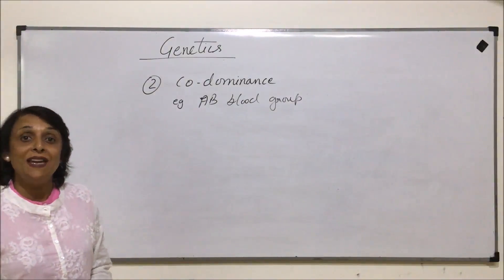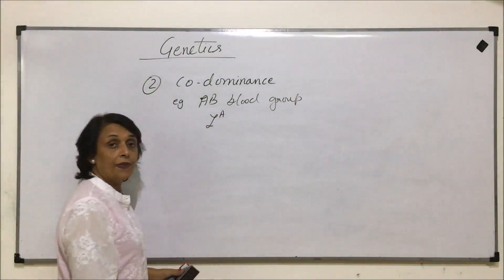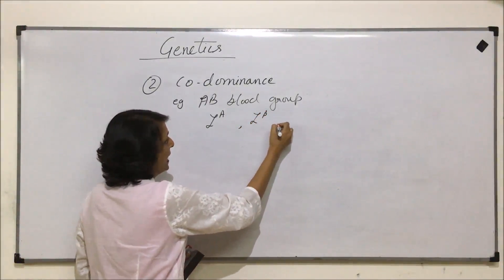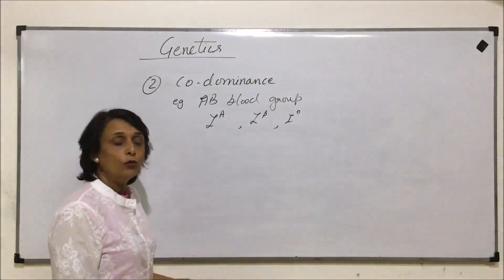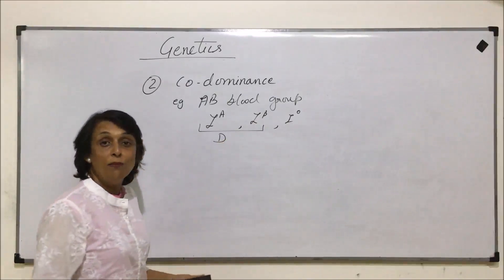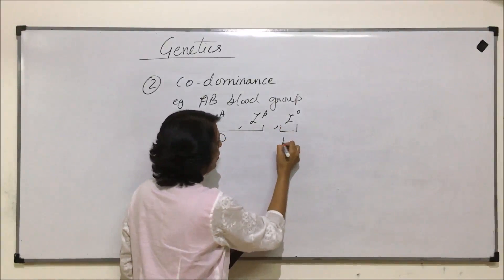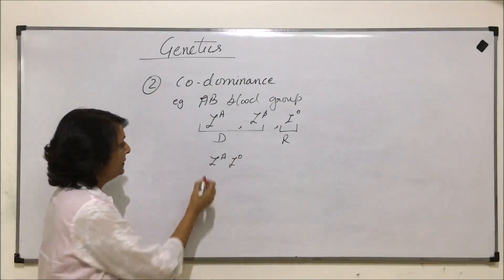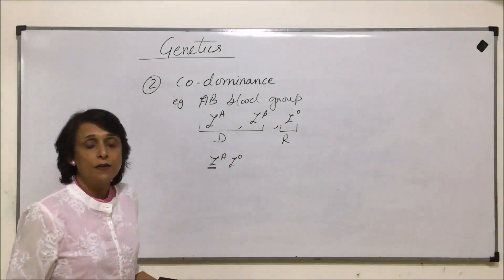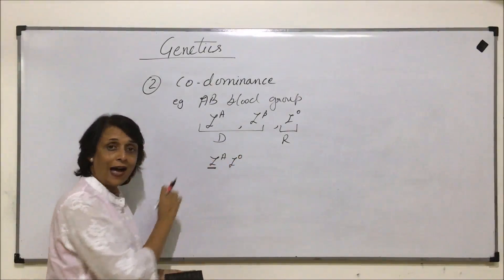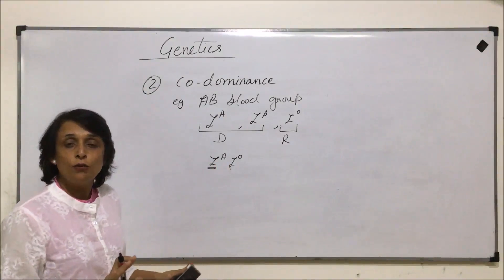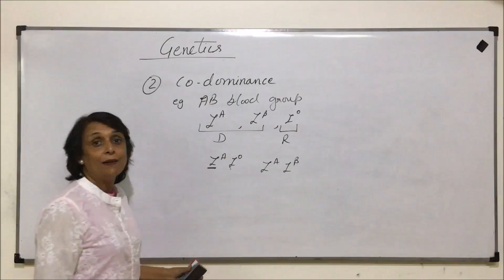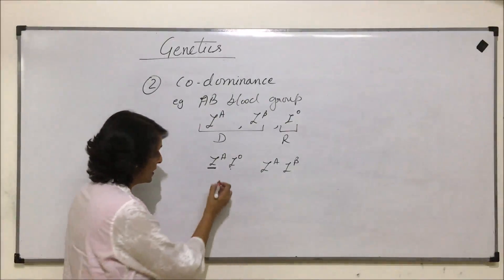Blood group is decided by three alleles: IA, which is responsible for formation of a type of protein on the RBC; IB is another gene; and IO is the third gene. Out of these three, IA and IB are dominant alleles, and IO is recessive. If an individual has IA and IO, the dominant gene will result in formation of an A antigen on the RBC, while the recessive won't contribute to synthesis.